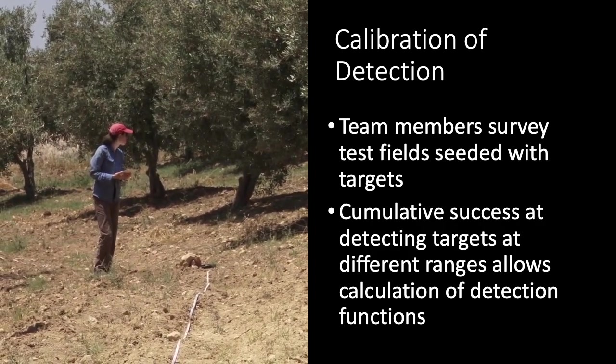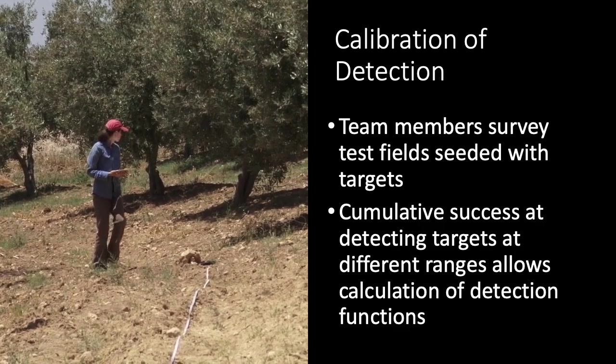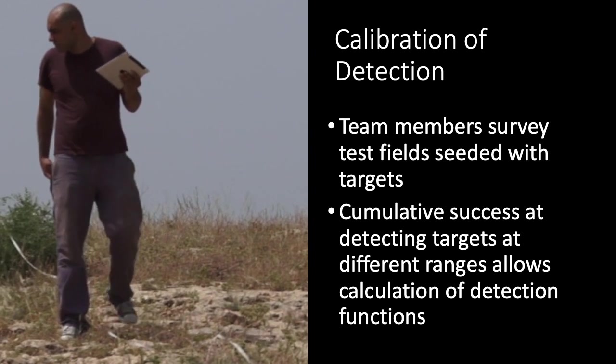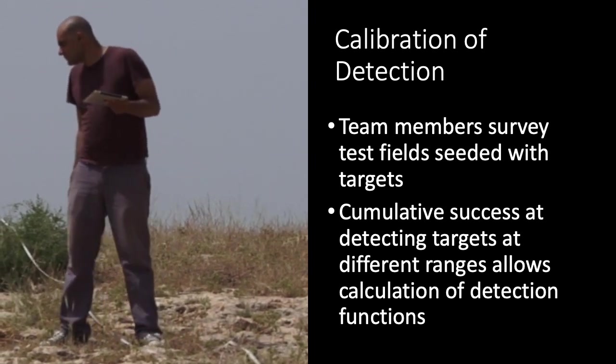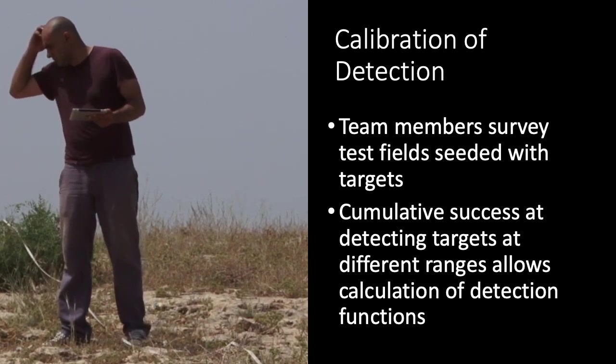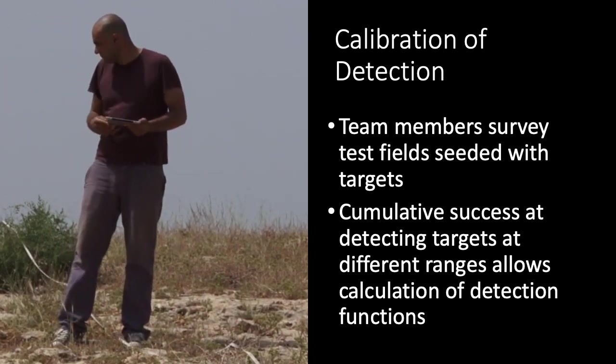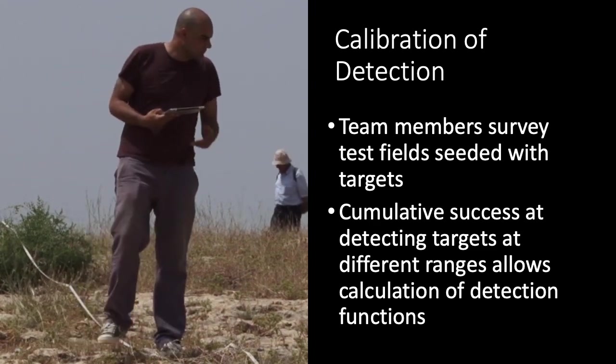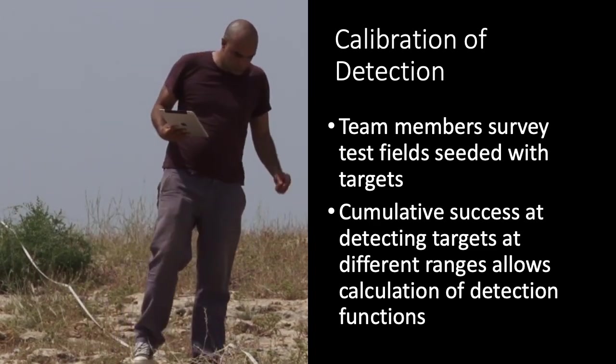Later, we take the data accumulated on the iPads and use it to calculate the detection functions for this particular field. We can then use those detection functions to estimate the sweep widths for various kinds of artifacts on fields similar to this and surveyed by the same team. We have to repeat this process on other fields with different visibility characteristics in order to calculate the sweep widths for those kinds of fields.